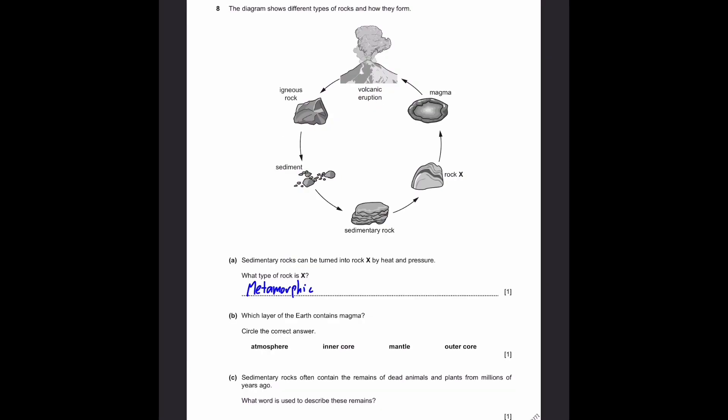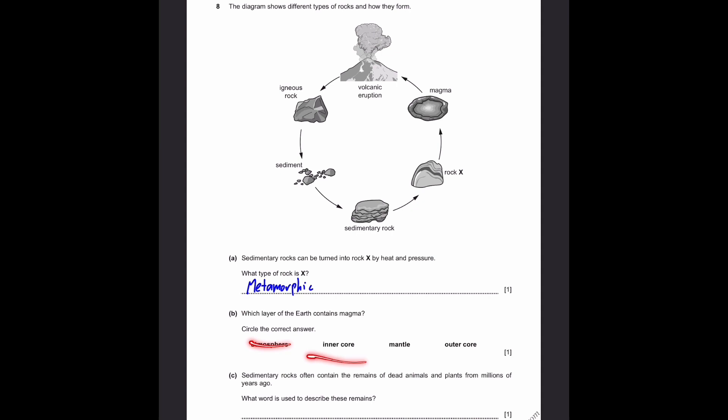Part B. Which layer of the earth contains magma? Circle the correct answer. Atmosphere? Nope. Inner core? Nope. That's too in. Mantle? Yes, it's the mantle. It's not too far below the crust. It's just the next layer. And outer core? Obviously not. Answer is mantle.